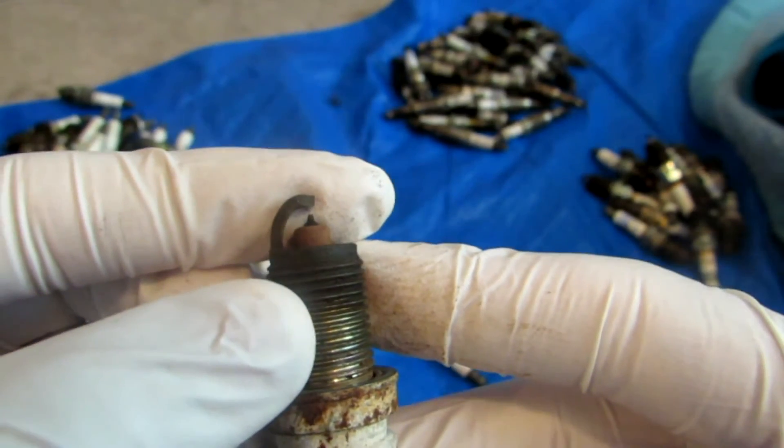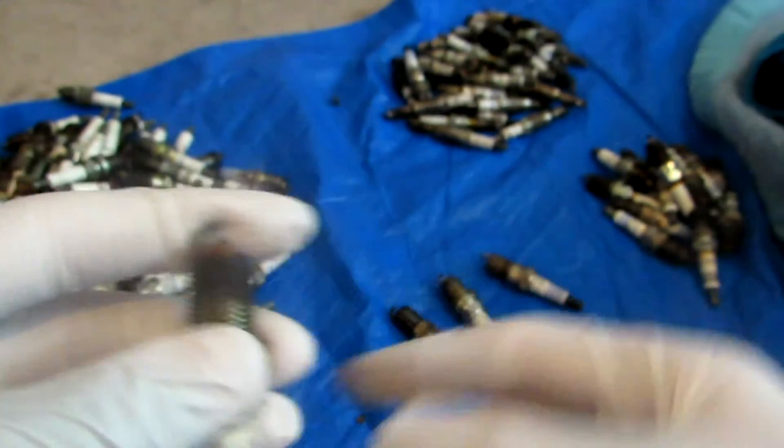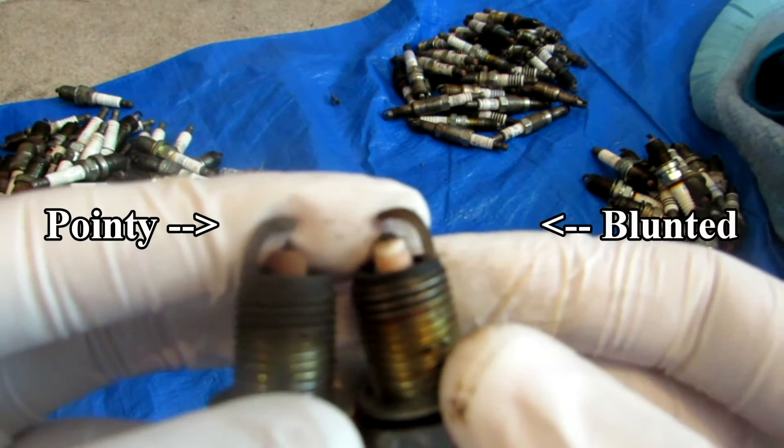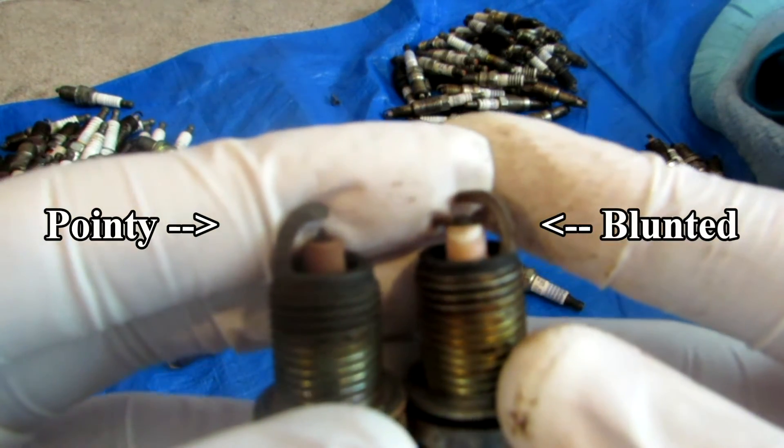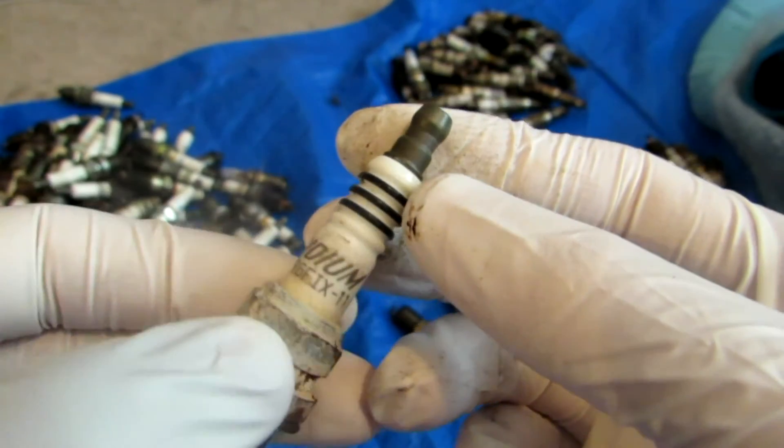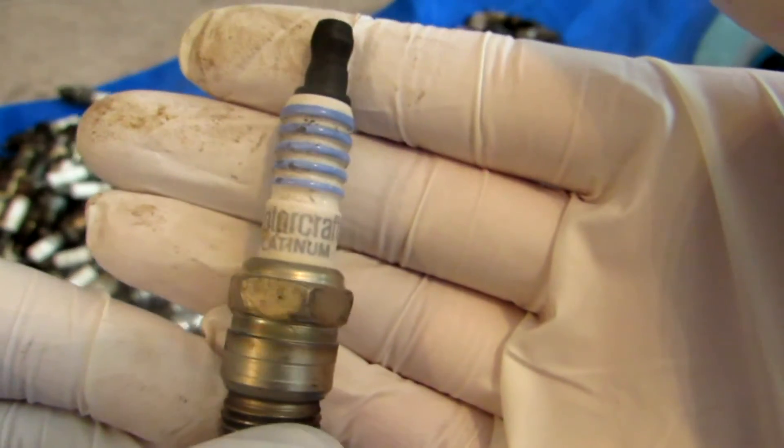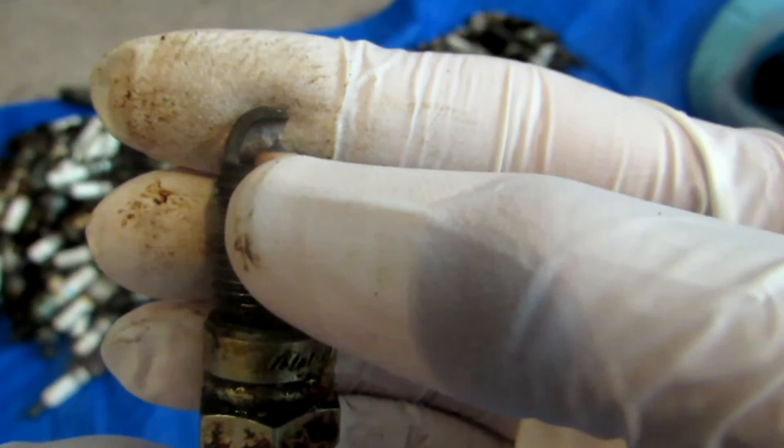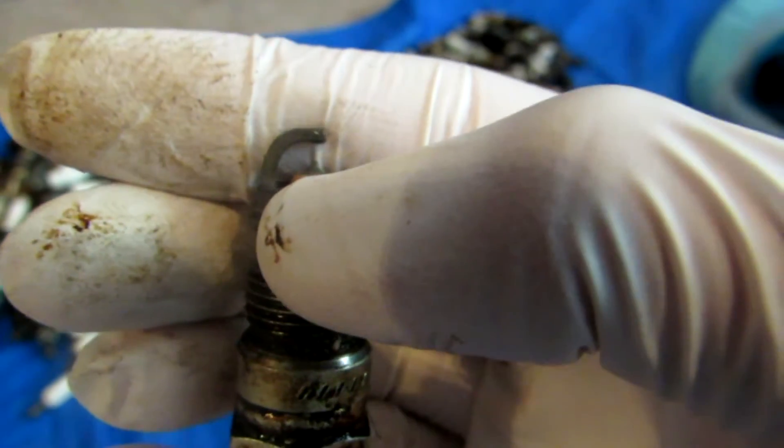First we can separate spark plugs with precious metals from those without. The spark plugs which are very blunted at the end contain no precious metals and can be discarded. Some spark plugs will actually be labeled Iridium and Platinum, so those can easily be identified, and some will not be labeled, but they will have a pointy tip which contains Platinum and Iridium.